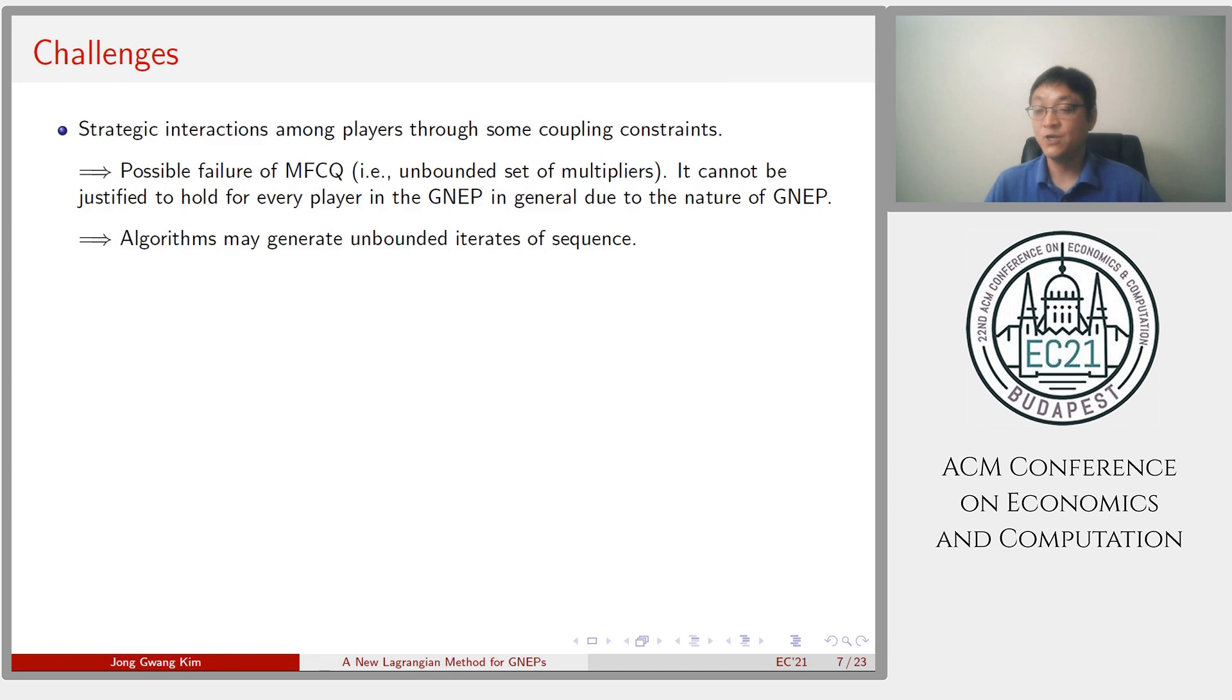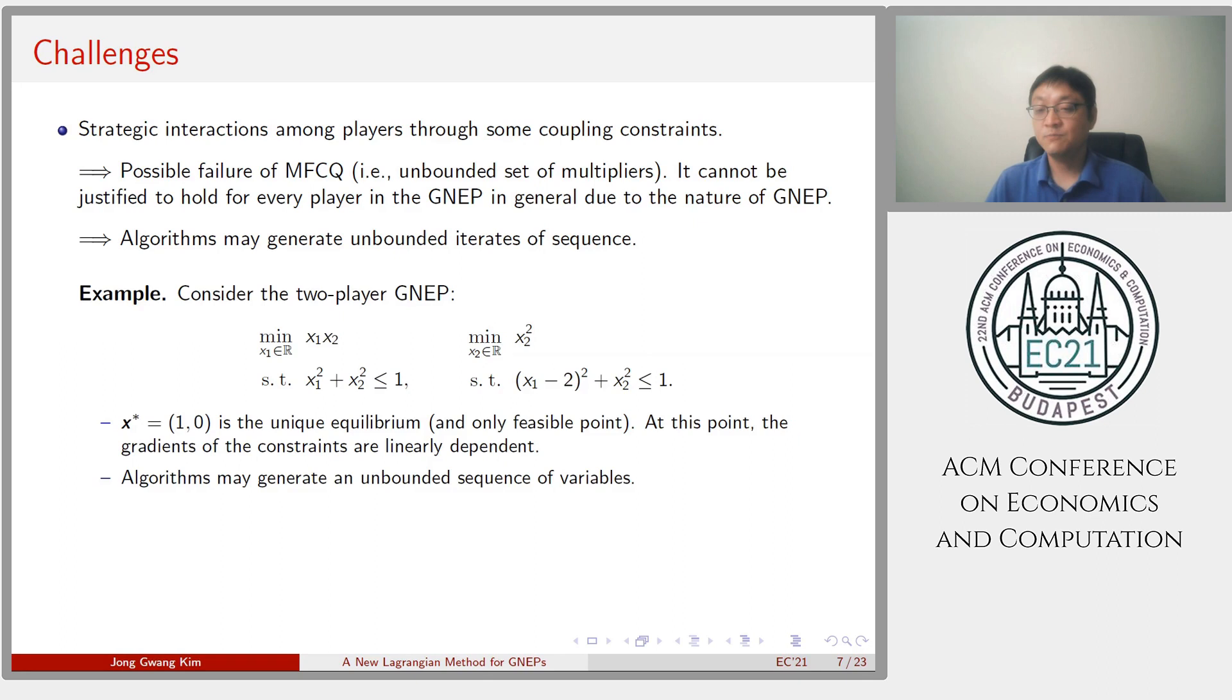I'd like to mention why equilibrium computation of general GNEP is still challenging. First, main reason is the nature of GNEP. Strategy interactions among players through some coupling constraints. This may lead to failure of Mangasarian-Fromovitz constraint qualification, MFCQ for short, which is equivalent to unbounded set of multipliers. In turn, algorithm may generate an unbounded iterate sequence.